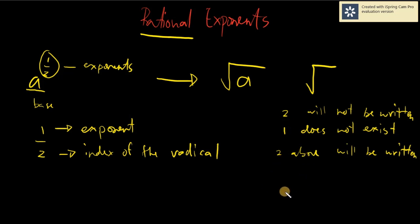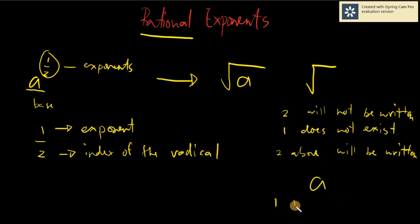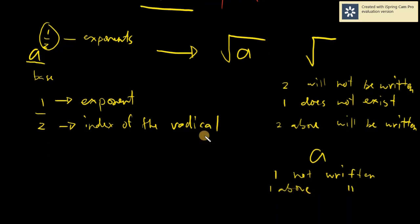The same rule applies to exponents: if you have a raised to one, the exponent one is not written. Anything larger than one is written. Now let's go to evaluating rational exponents.